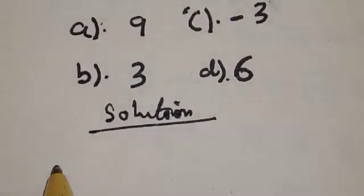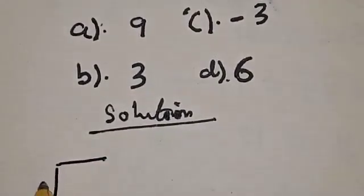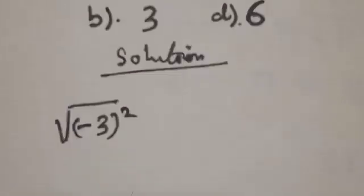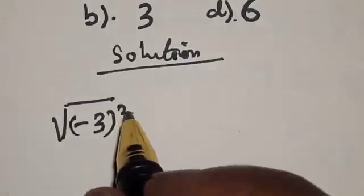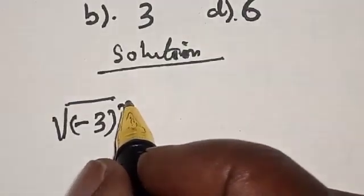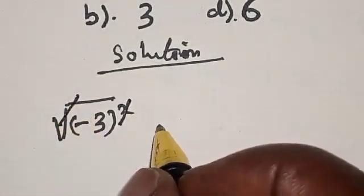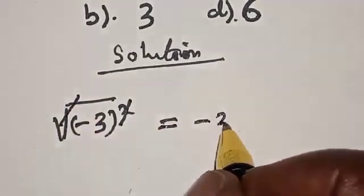We have square root of minus 3 square. Want to know the answer if it is correct. Now ordinarily, if you look at it, you may just cancel these two. We cancel this square root, then you say minus 3 is that our answer? No, that is not our answer.